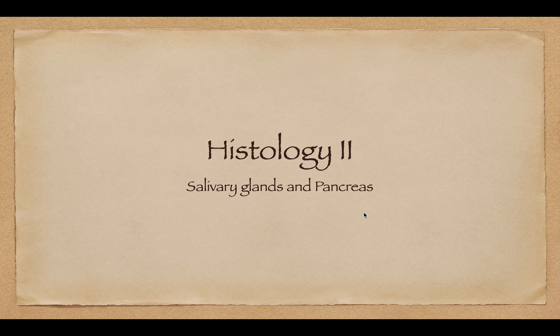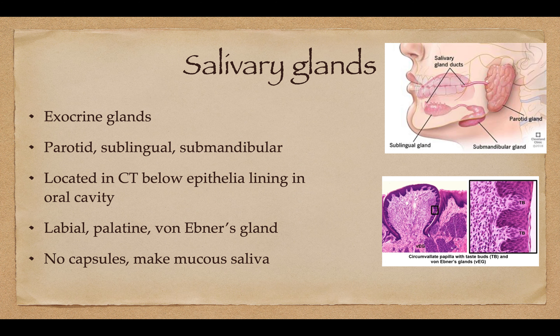Welcome back. Today we'll be covering the histology of the salivary glands and the pancreas. The salivary glands are your exocrine glands, and there are three of them. The parotid, here in the cheek, is going to be the largest one; the sublingual beneath the tongue; and the submandibular below the jaw. They're all located in the connective tissue below the epithelia lining the oral cavity.